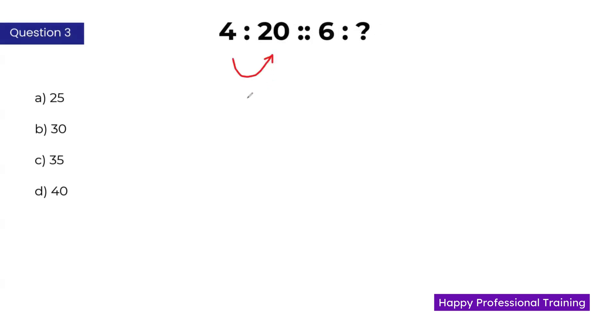The second number here is identified by multiplying the first number with 5. So 4 into 5 is 20. Similarly, apply it to the second one: 6 into 5 is 30. So B is the correct answer here.